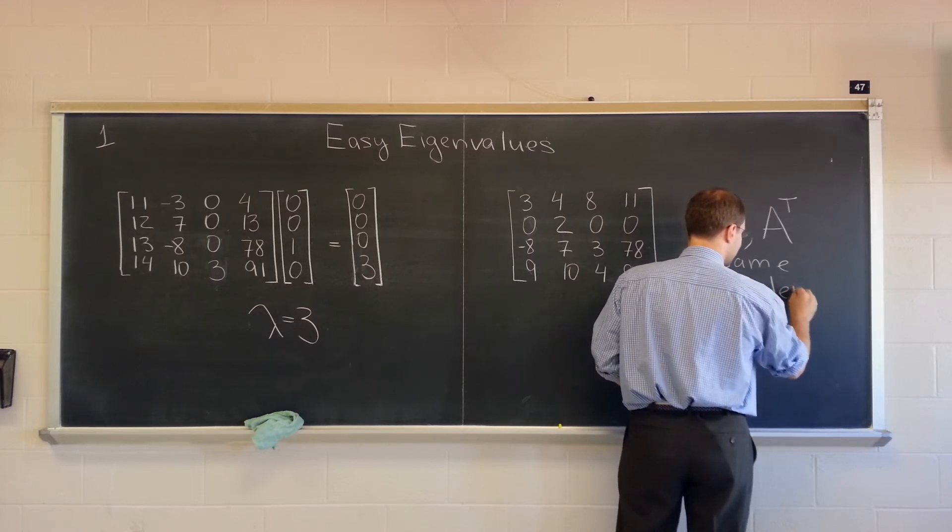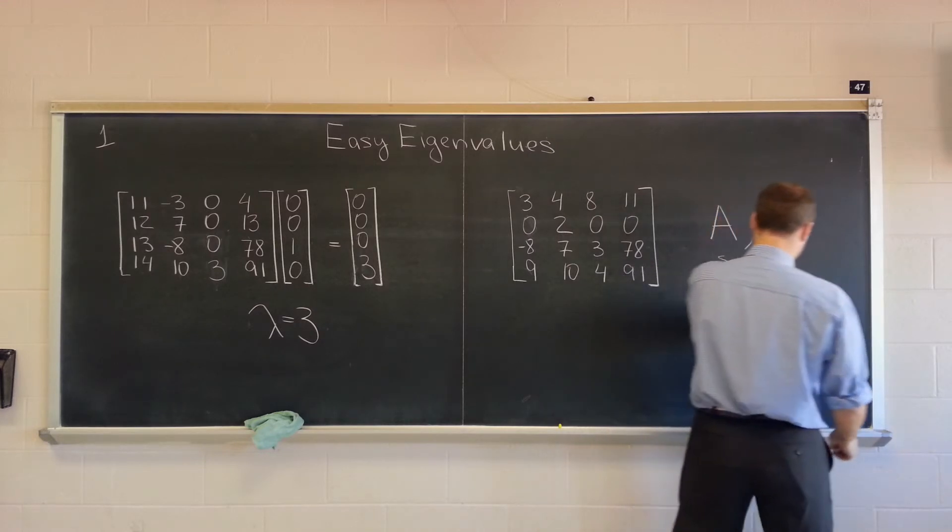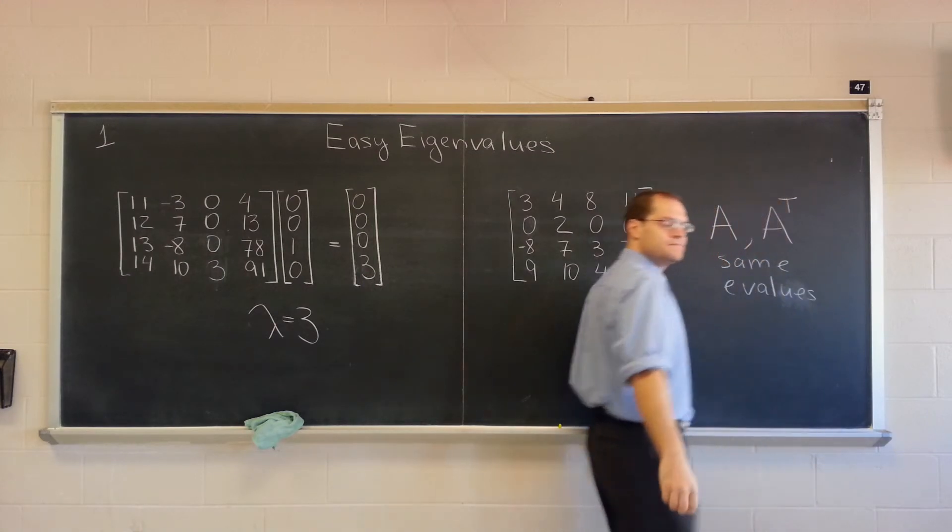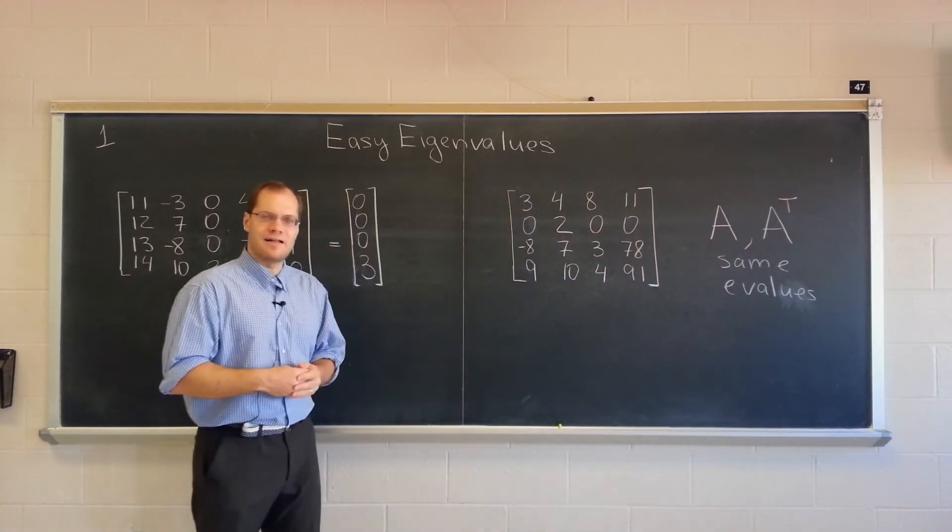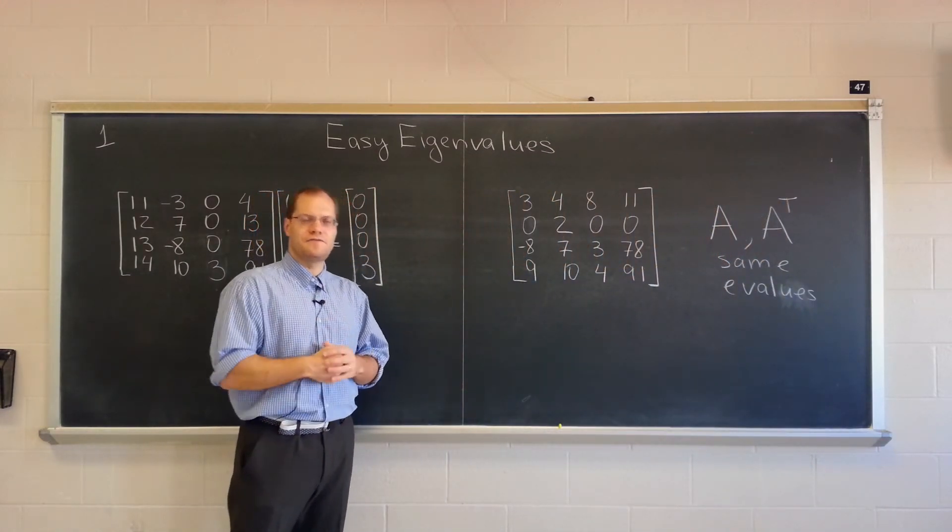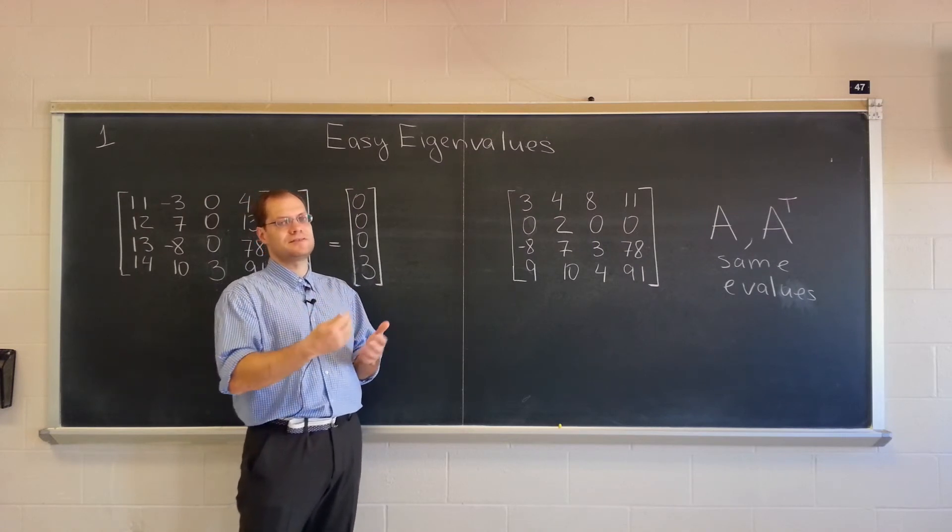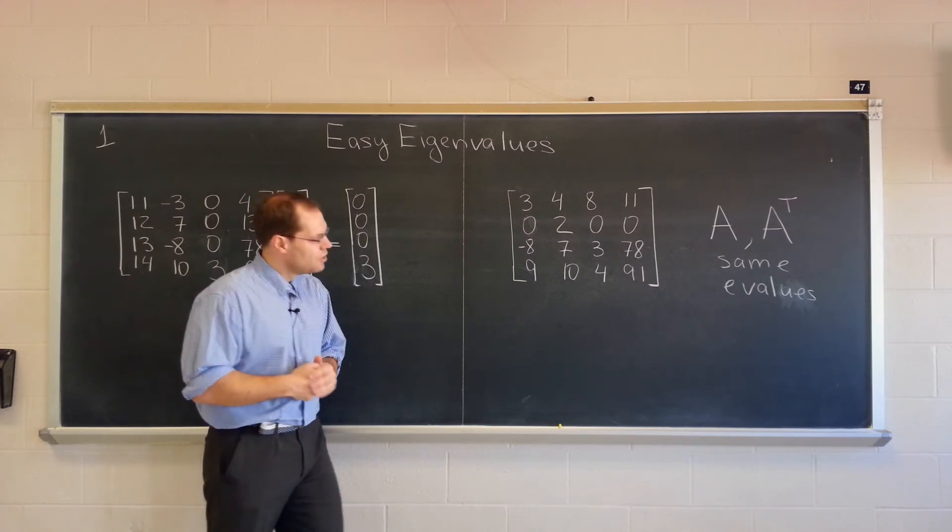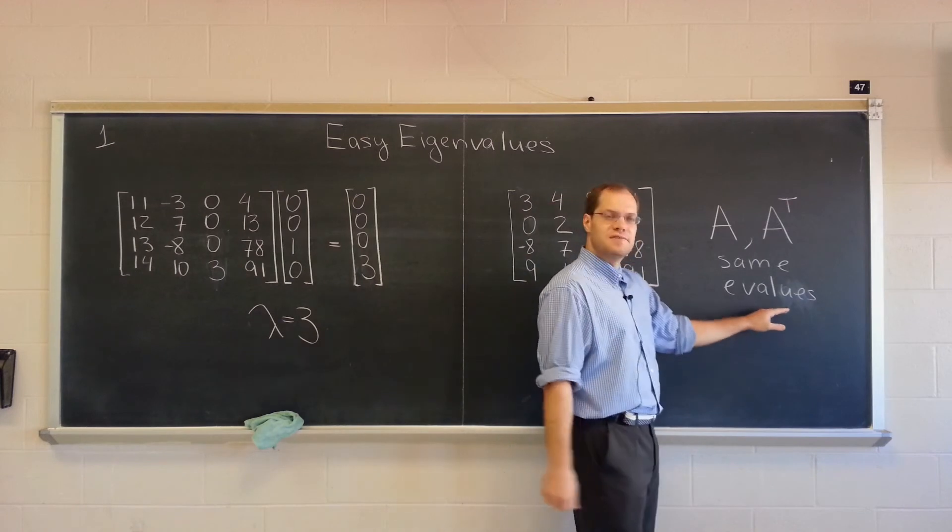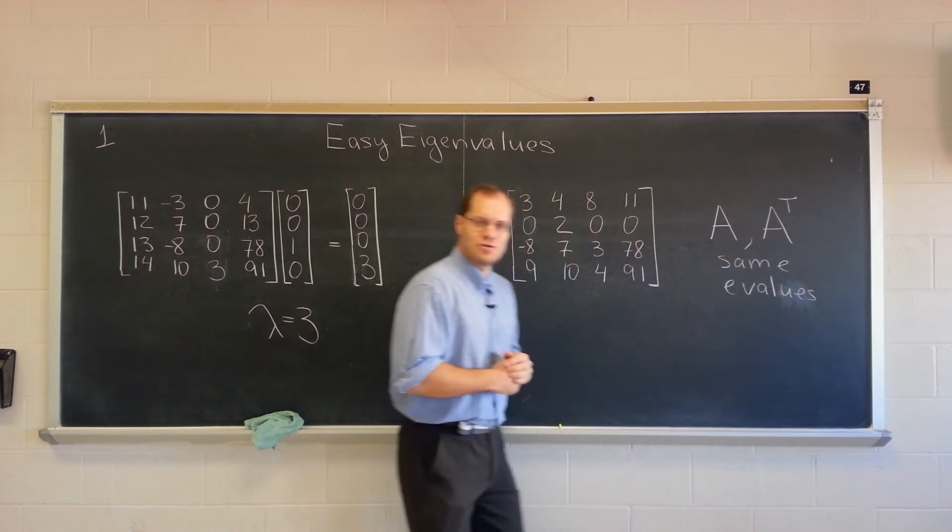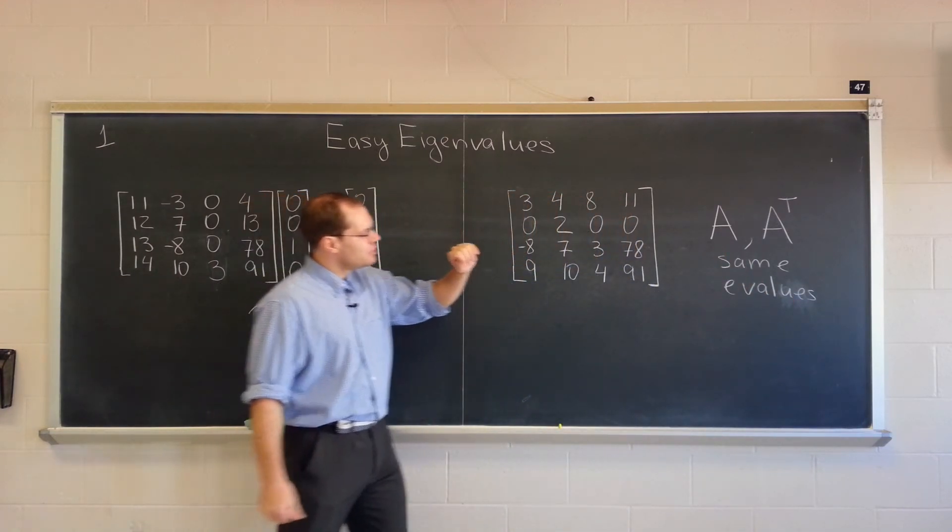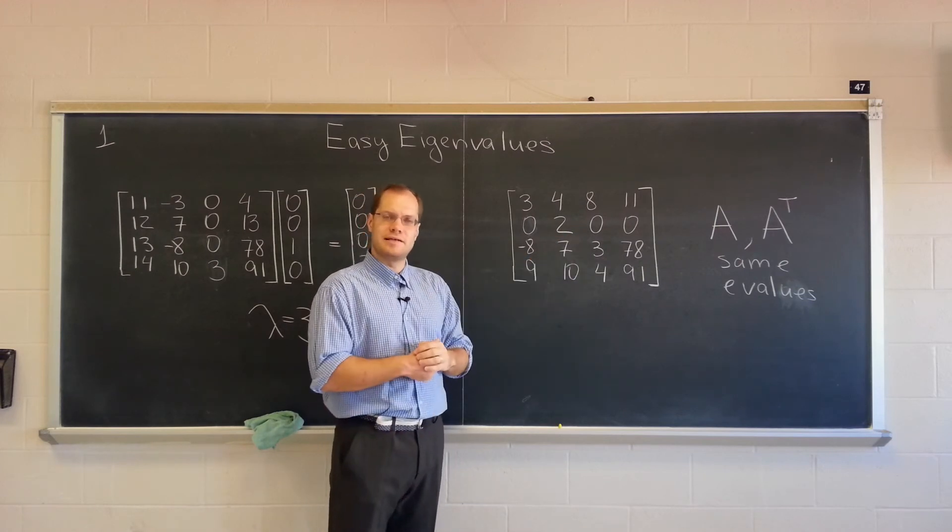So whenever there is a feature that tells you something about the columns, there's a corresponding feature about the rows, because it tells something about the transpose, where the eigenvalue is given away, but the eigenvector you don't know. So in this situation, you know that there's an eigenvalue that equals two,